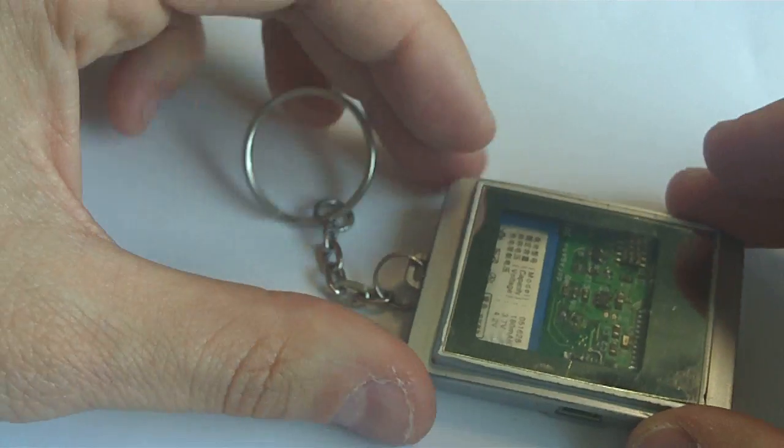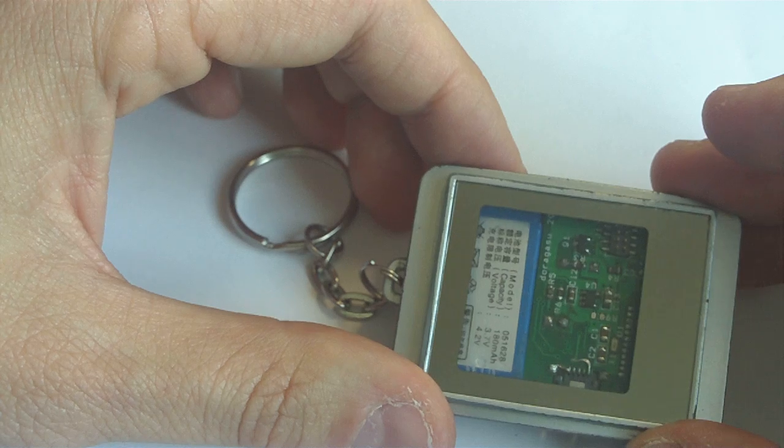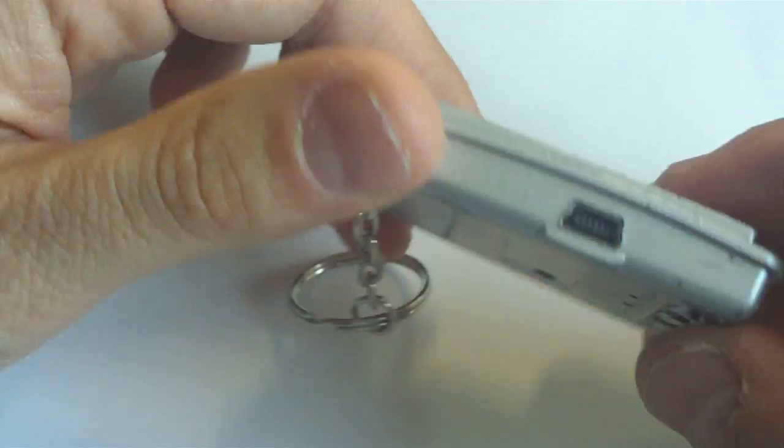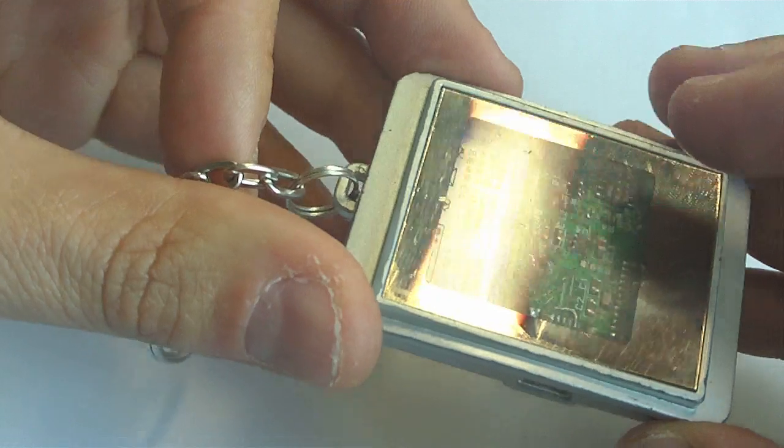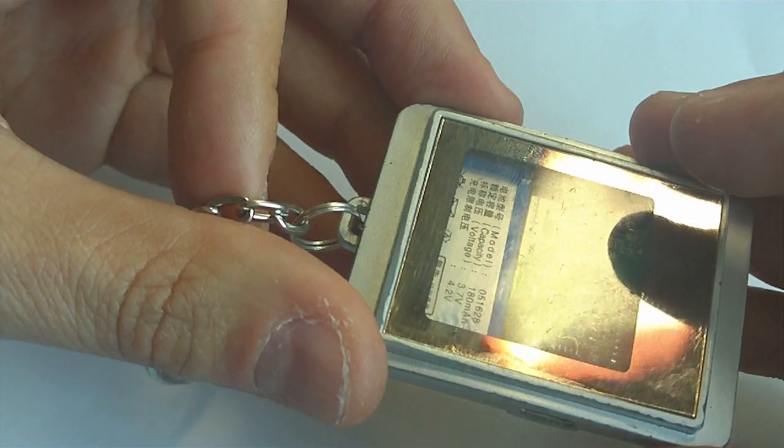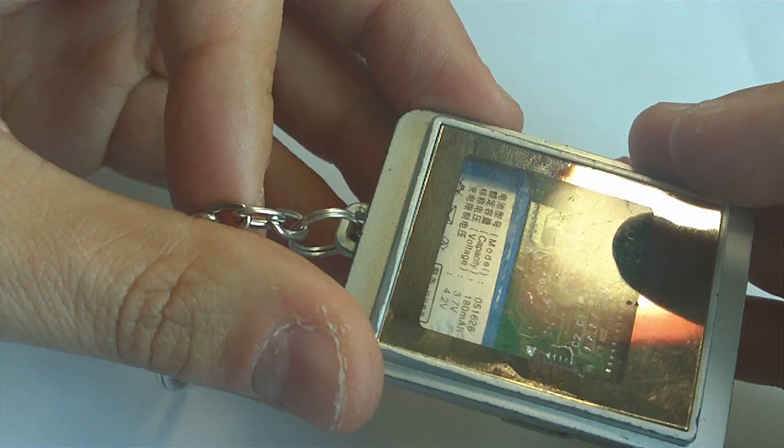As you can see, the keychain works fine, but... Did it solve the problem it was created for? Unfortunately not. Because my wife never remembers to charge the keychain battery. Again, how can I solve this new problem?